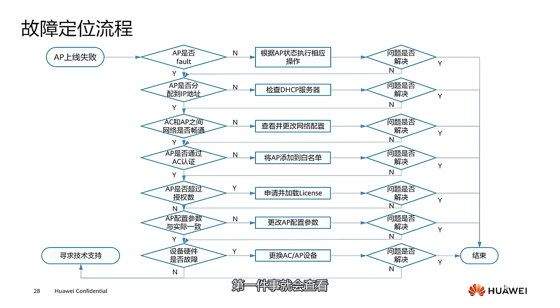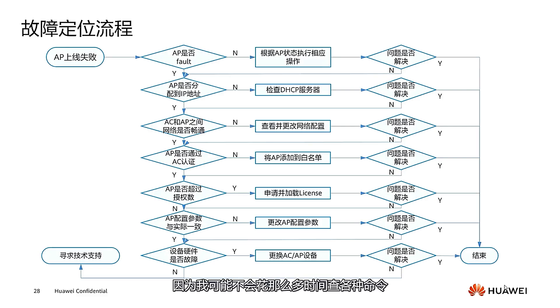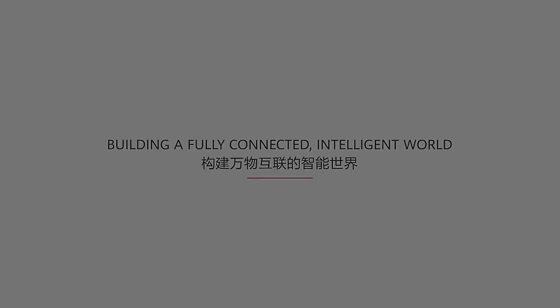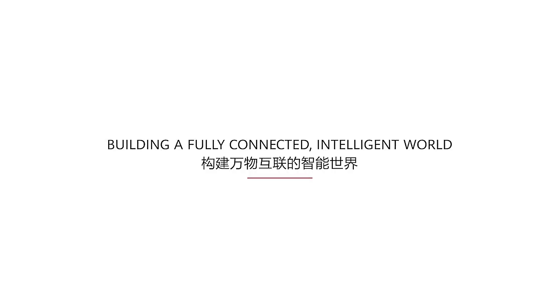The last step is to check whether the device hardware is faulty. On a live network, the first thing to do is check if the hardware is faulty, rather than spending time checking various commands. If the hardware is fine, then move on to the standard troubleshooting process to check other potential issues.